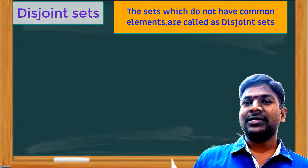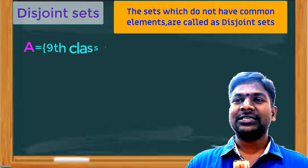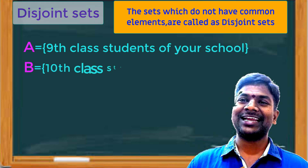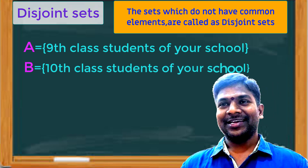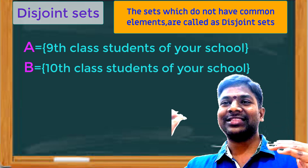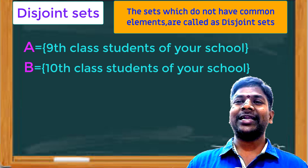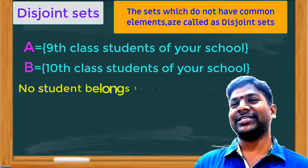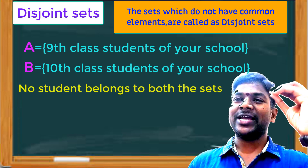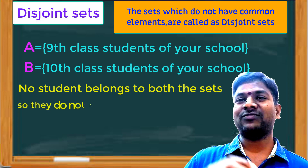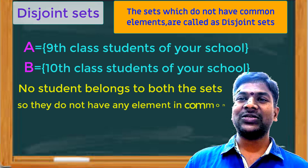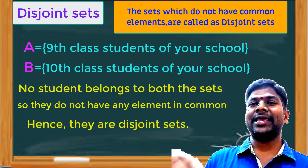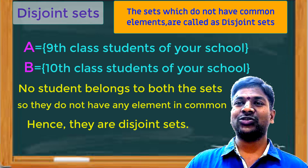You can take many examples from daily life. For example, the set of students of 9th class in our school and the set of students of 10th class in our school. Students of 9th class are different and students of 10th class are different. No student can be found in both sets. These two sets are also disjoint sets.